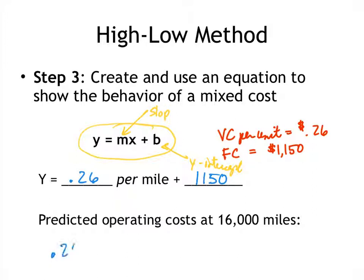So now we can predict the cost at sixteen thousand miles. So we've got zero point two six per mile. So in this case we're predicting cost at sixteen thousand miles plus the fixed cost of one thousand one hundred fifty dollars gives me a predicted cost at sixteen thousand miles of five thousand three hundred ten dollars.